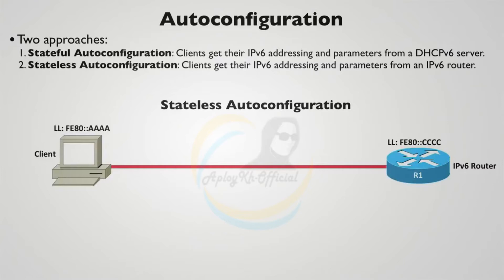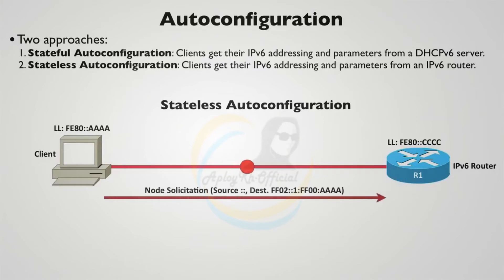Let's say this client came up with IPv6 enabled on the network interface card. As a result, the client can automatically give itself a link-local address — labeled here as FE80::AAAA, while the router has FE80::CCCC. The client with its newly acquired link-local address wants to make sure nobody else on the network segment has the same address. To do that, it sends out a neighbor solicitation multicast packet.